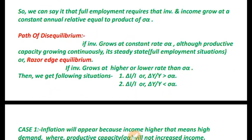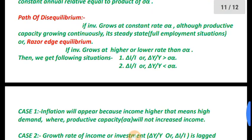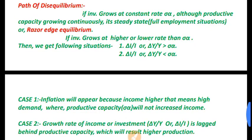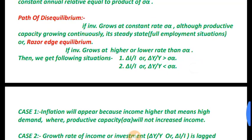If investment grows at exactly the rate σ × α, productive capacity also grows continuously — this is the steady-state or full-employment situation, called razor-edge equilibrium. If investment grows at a higher rate than σ × α, there is inflation. If σ × α grows faster, there is overproduction — a deflationary situation. So steady and stable growth is very difficult; the economy will tend toward either inflation or overproduction and unemployment.